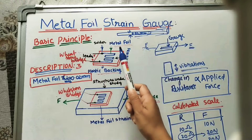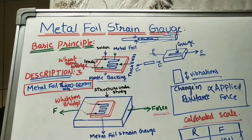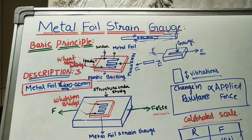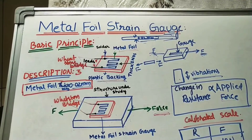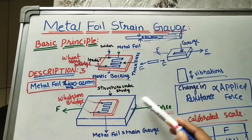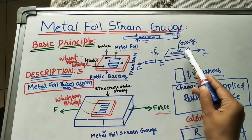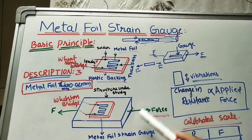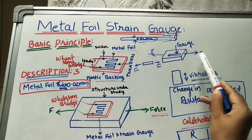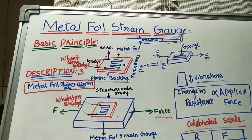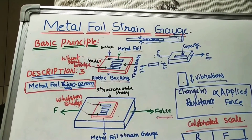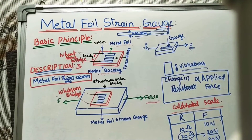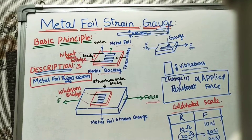That is why we are calling it a metal foil strain gauge. This is one of the bounded type strain gauges. It is called a bounded type strain gauge because whatever strain gauge is there, we are sticking it on the surface of the structure — we are pasting this gauge on the structure whose forces we have to find.